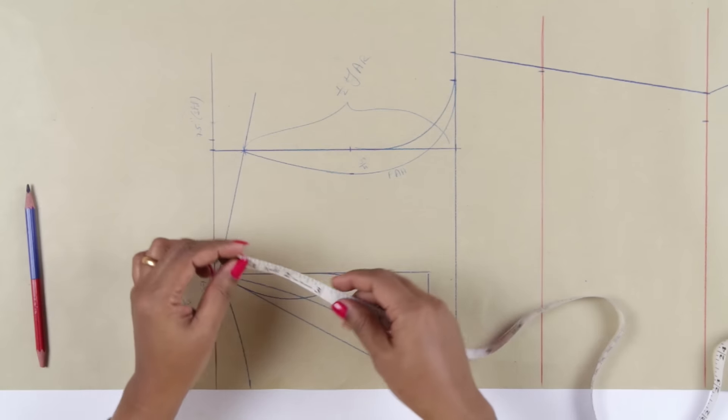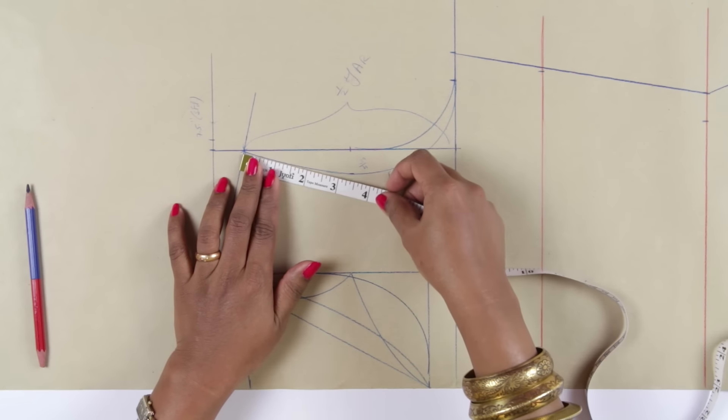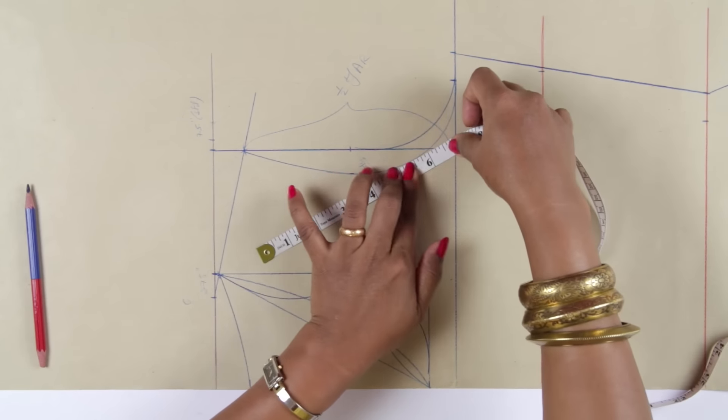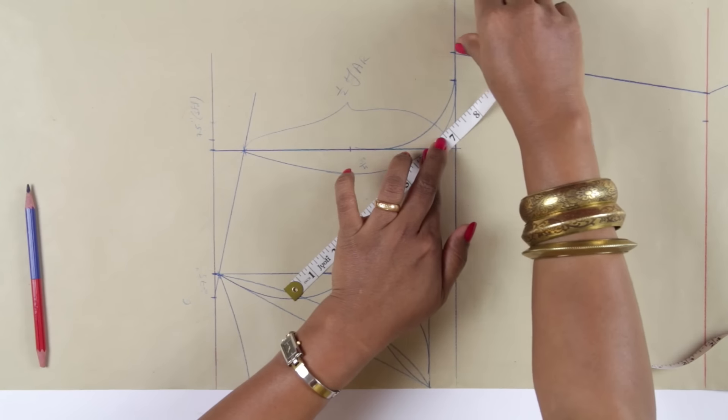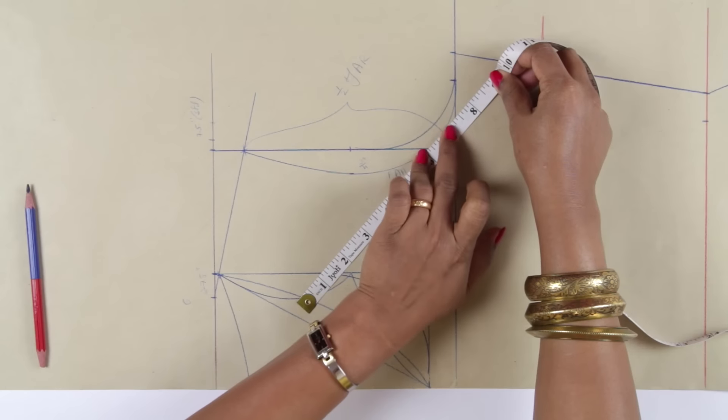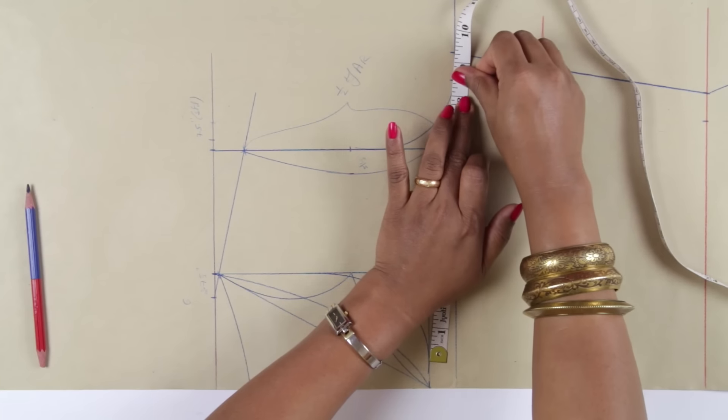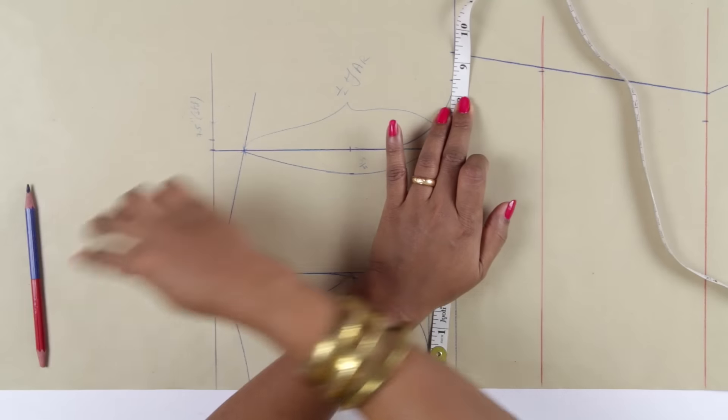Now once you have drawn this armhole, just measure your armhole. Walk your tape around the curve and measure till the ease point on the chest. It should give you half your armhole measurement plus whatever ease you have added.